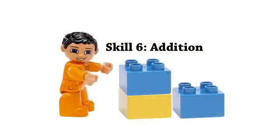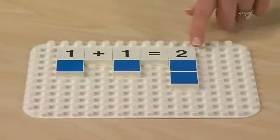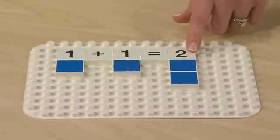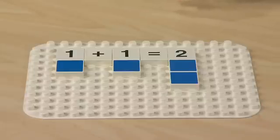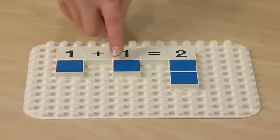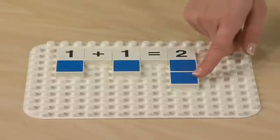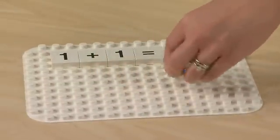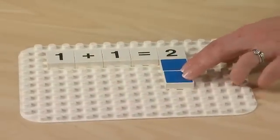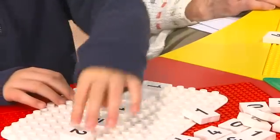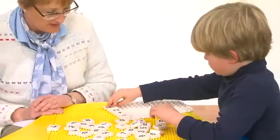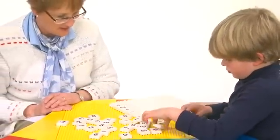Skill 6: Addition. Start with a simple addition problem, such as 1 plus 1 equals 2. Students can use the mosaic tiles to represent each value, then move the mosaic tiles from under the items added to the area under the answer. After students understand the concept of adding quantities together, you can simply use the number tiles without the mosaics.